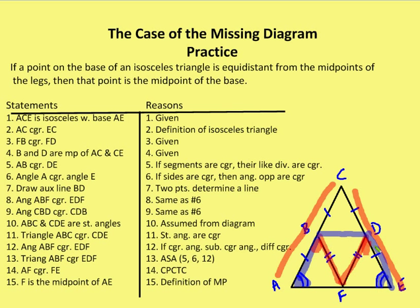Now I have angle ABF congruent to EDF, AB congruent to DE, and BF congruent to FD. So triangles ABF and EDF are congruent by side-angle-side. Therefore AF is congruent to FE by CPCTC. F is the midpoint of AE by the definition of midpoint, and I'm done with my proof.